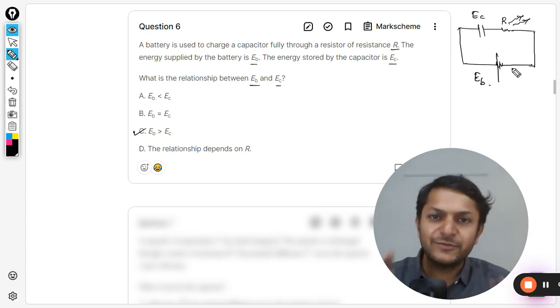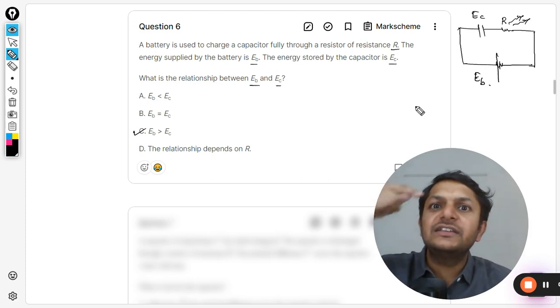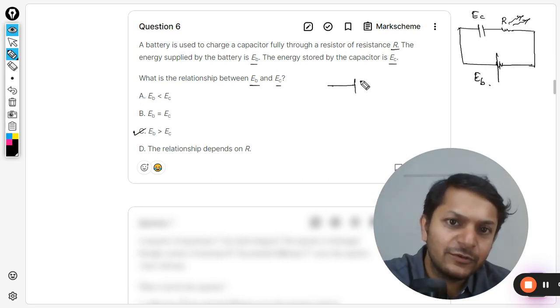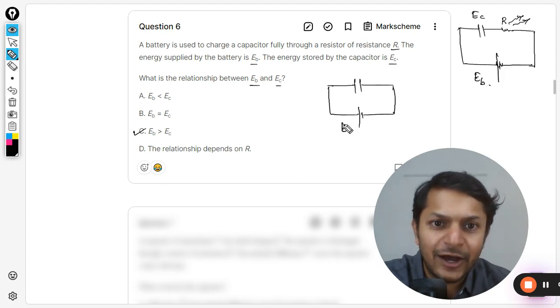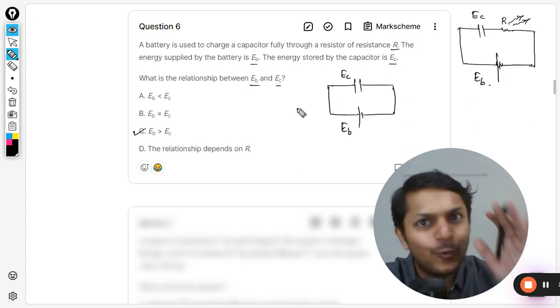But there is one more point that I wanted to make here, and that is why I'm doing this question. You see, even if the resistance is not there, like if there is only this capacitor and this battery but the resistance is not there, now tell me if this is Eb and the energy stored in the capacitor is Ec, what do you think?